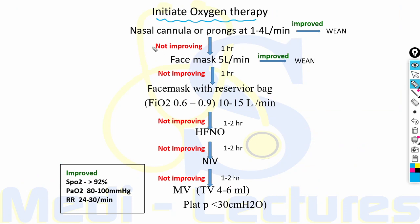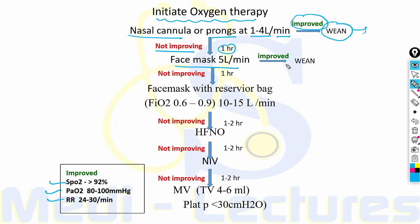We start oxygenation with nasal cannula at 1 to 4 liters per minute. If the patient improves — SpO2 more than 92%, PO2 on ABG 80 to 100, and respiratory rate 24 to 30 — we wean the oxygen. If not improving after one hour, we start a face mask at 5 liters per minute. If still not improving, we escalate to face mask with reservoir bag or NRBM.